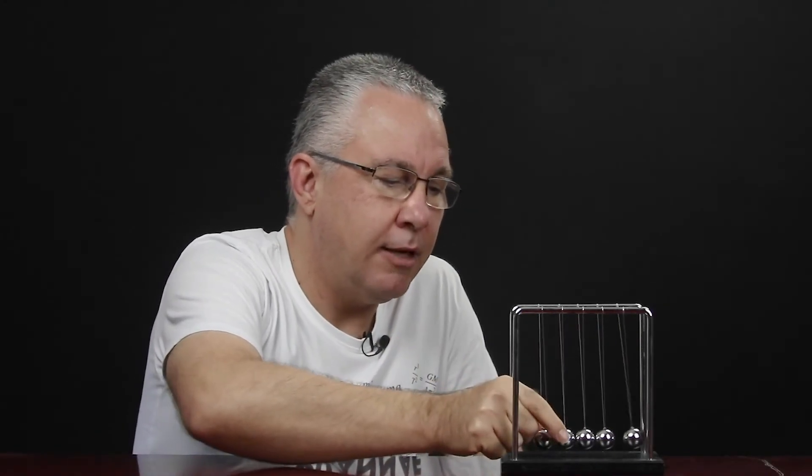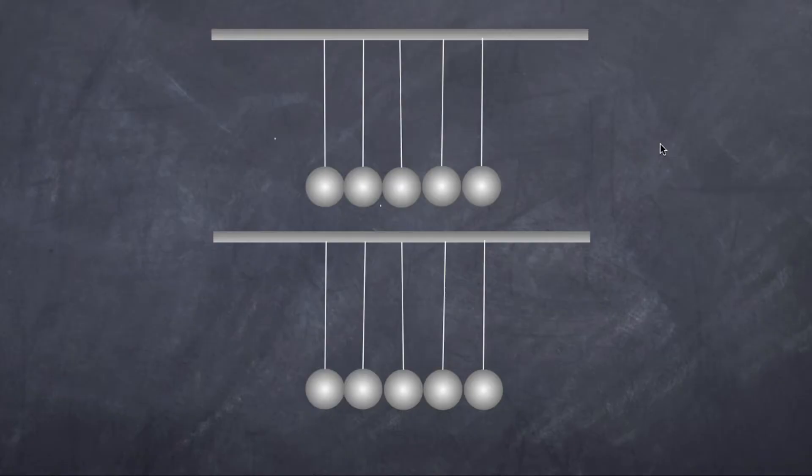Back to our Newton's Cradle — what really happens? If I take one ball back, I get one ball on the other side. If I take two balls back, I get two balls on the other side. If I take three balls back, I get three balls on the other side. And if I take four balls, I get four balls on the other side. In each of those cases, the conservation of energy is roughly satisfied.